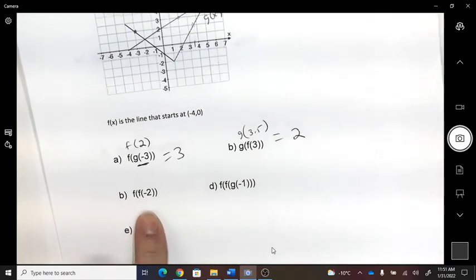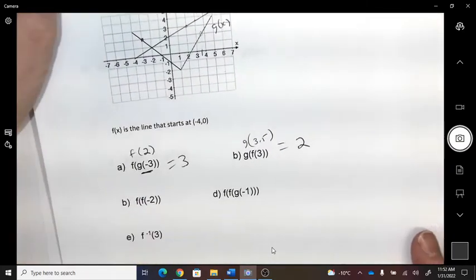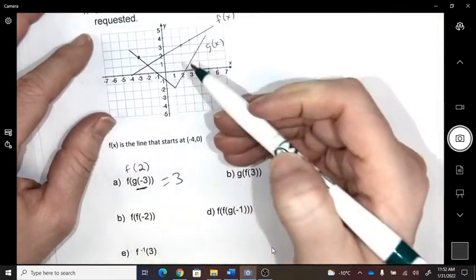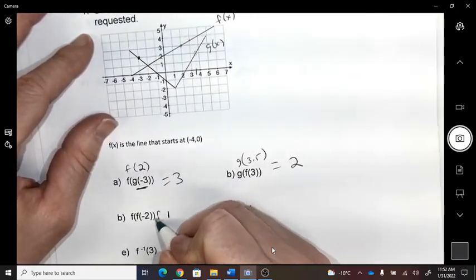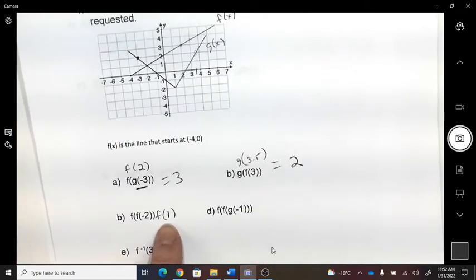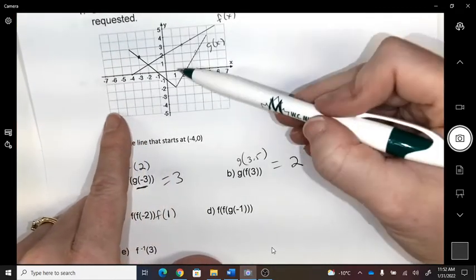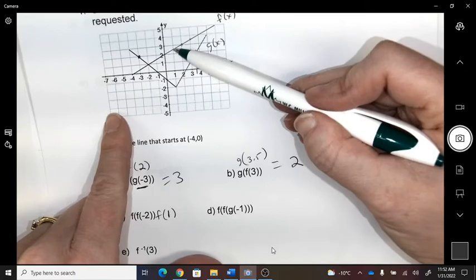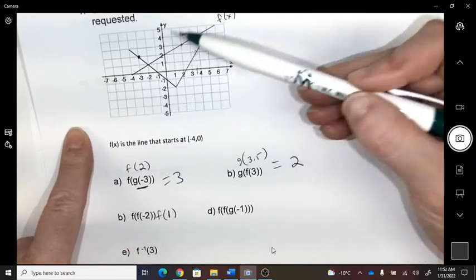Negative two on the f. So negative two, it's at one. So now f at one is 2.5.